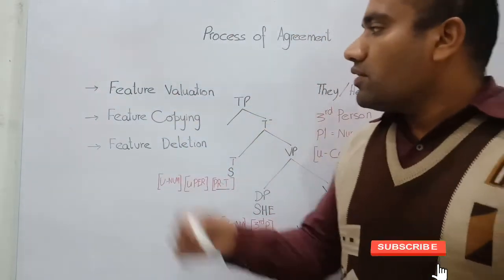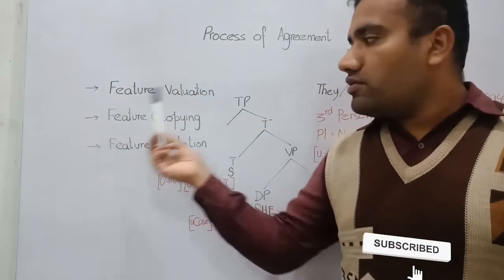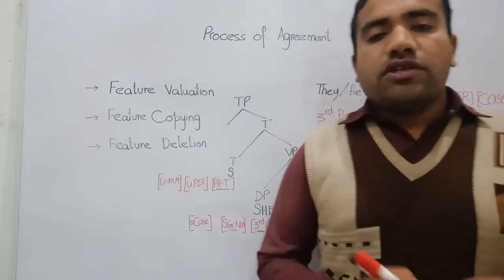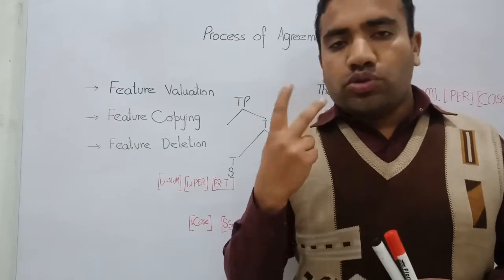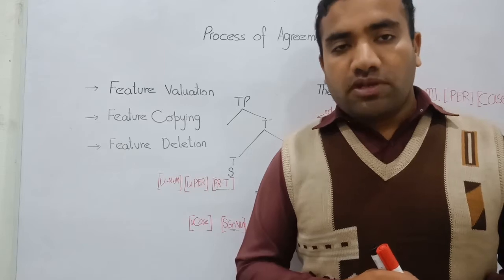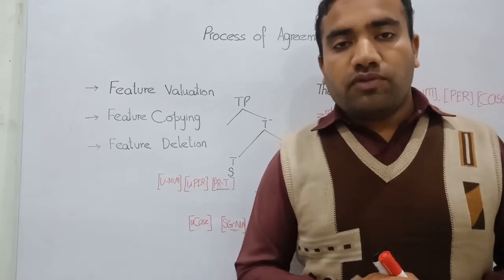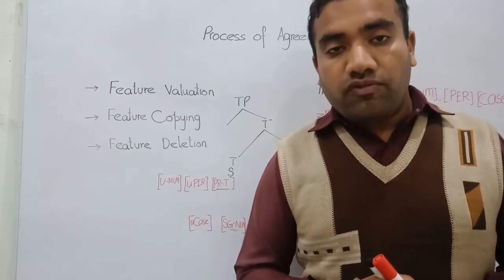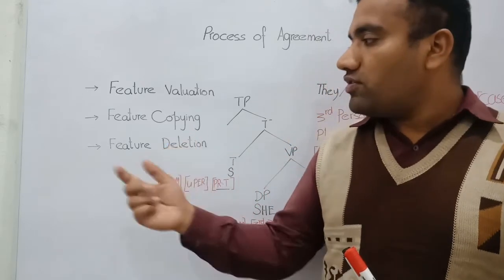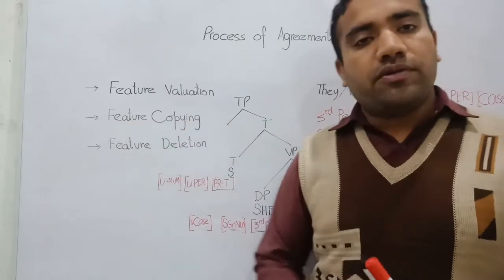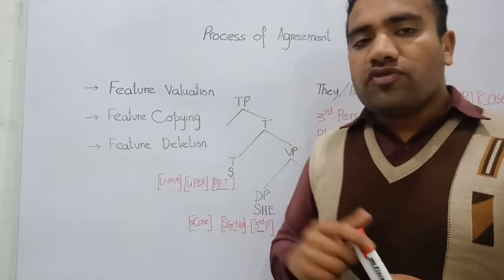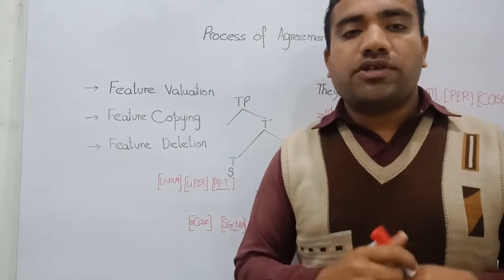The first step is feature valuation. In syntactic theory, there are two types of features: interpretable features, which are valued features, and the other type is unvalued features. This is the first process — feature valuation.